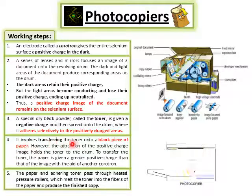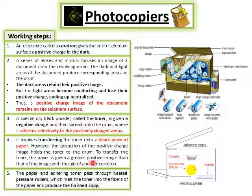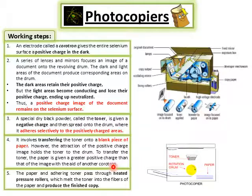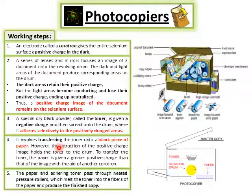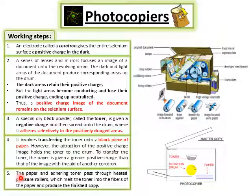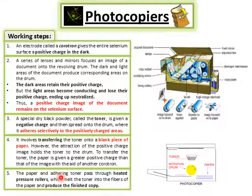The fourth step: we have a blank page on which we want a copy of our document. We give the blank paper a positive charge using a wire or electrode. This is a total positive charge. Now the negatively charged ink in dry form sticks to our blank paper, and then the paper has the copy in permanent form.